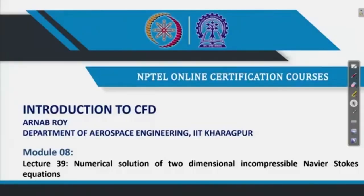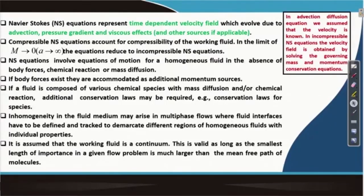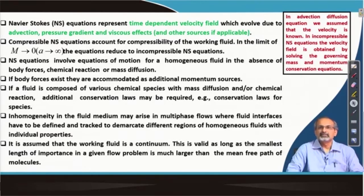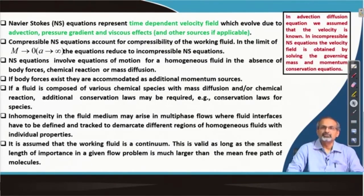This is the first lecture on two dimensional incompressible Navier-Stokes equation. Let us recollect that when we were discussing about the one dimensional advection diffusion equation, we assumed that the velocity field is known to us by some means. We did not try to solve for the velocity field; we made certain assumptions that the velocity field values could be of this range and we tried to work out how advection diffusion works in a combined manner.